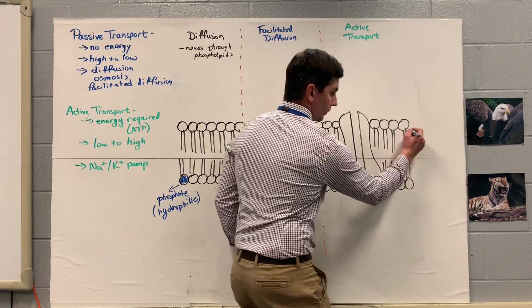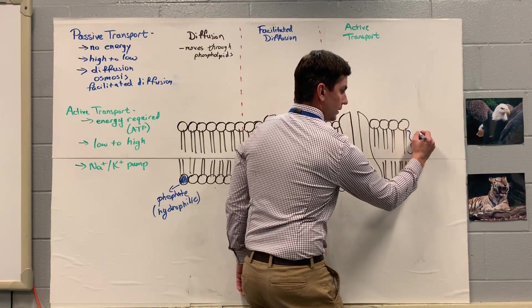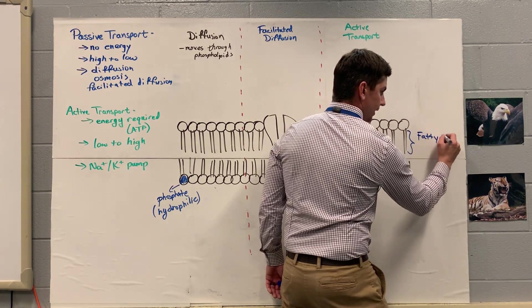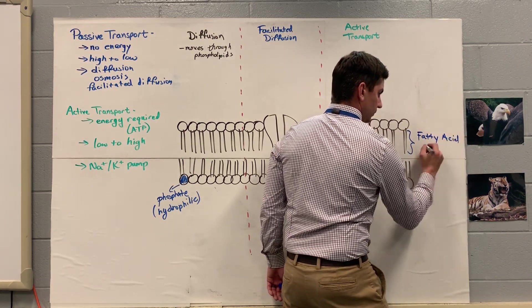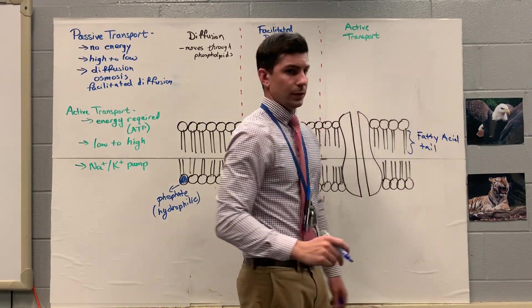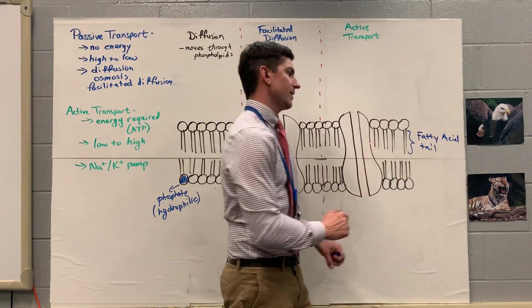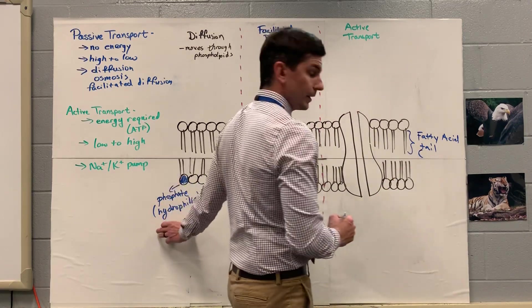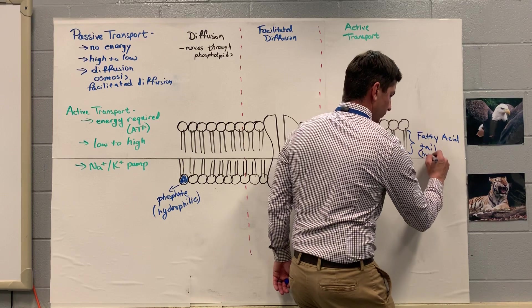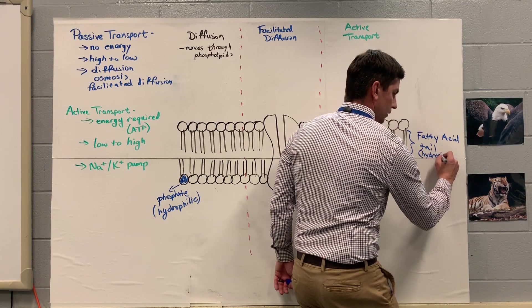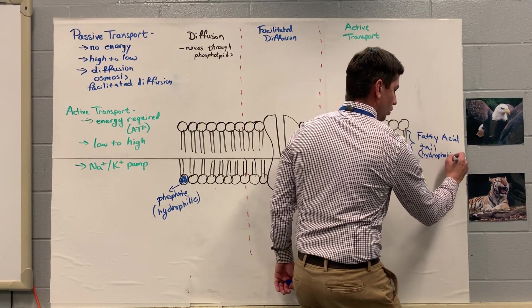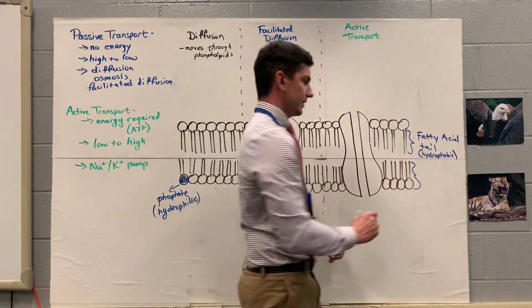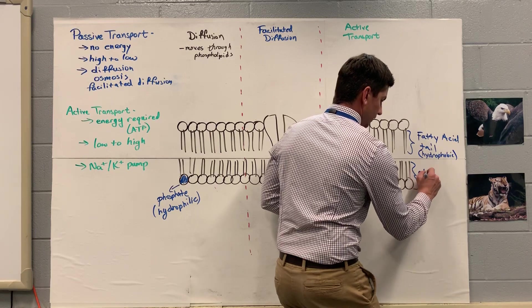Coming over here, taking this little guy, this is our fatty acid tail. So the inside of our cell membrane, that's the fatty acid tail. If the outside is hydrophilic, the inside is going to be hydrophobic. In other words, it repels water. So it's going to essentially be non-polar. And then together, the phosphate and the fatty acid make up a phospholipid.